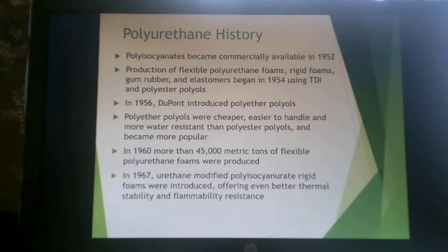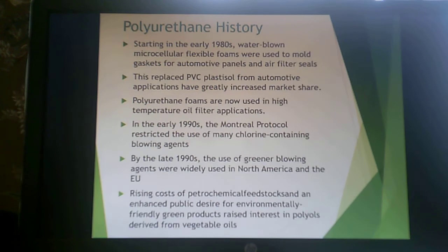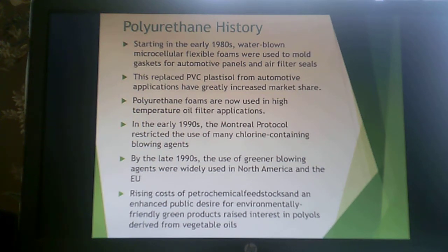In 1960, about 45,000 metric tons of flexible polyurethane foams were produced. In 1967, urethane-modified polyisocyanurate rigid foams were introduced, offering better thermal stability and flammability resistance. In the 1980s, water-blown microcellular foams were first used as mold gaskets for automotive seat panels. This was significant because prior blowing agents were volatile organic compounds and CFCs, which were bad for the environment. These mold gaskets also replaced PVC plastisols in automotive applications.